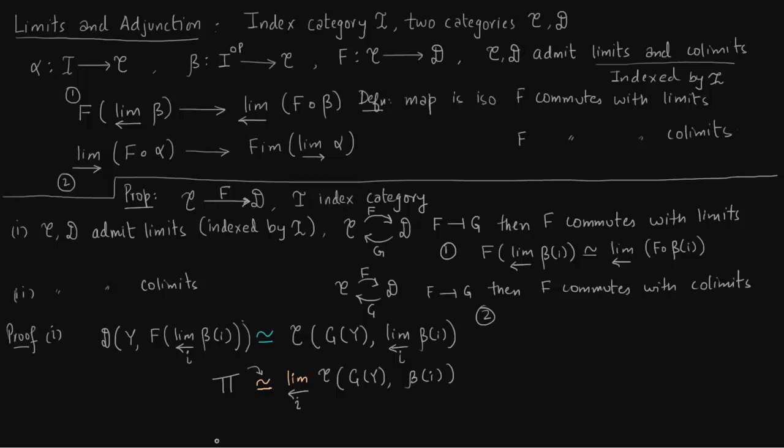Now we will use adjunction again. I'm writing direct product here to complete the argument. Now we can use adjunction again. So GY means here it is Y F beta I, since beta I is an object of the category C.